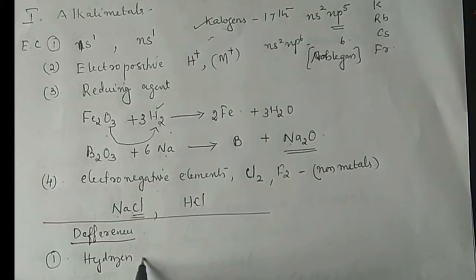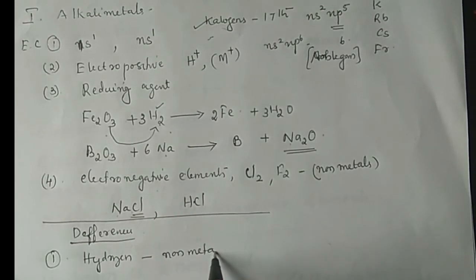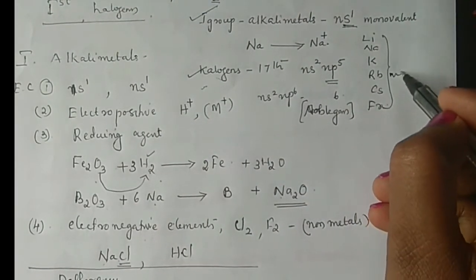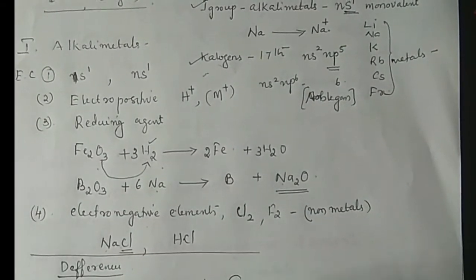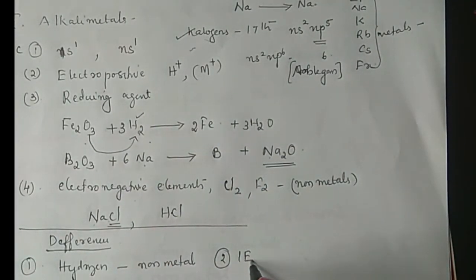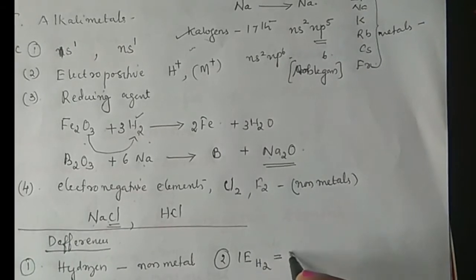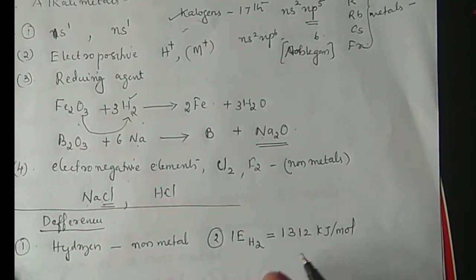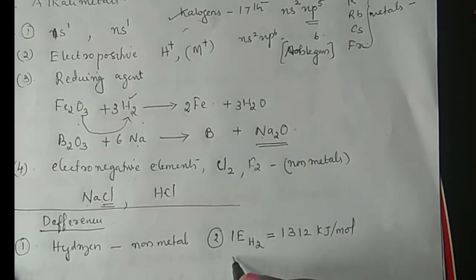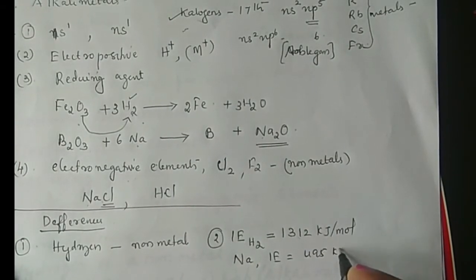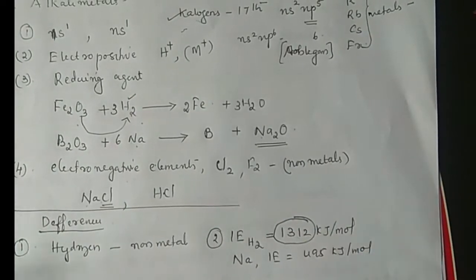However, there are also differences between hydrogen and alkali metals. Hydrogen is a non-metal, whereas alkali metals like sodium, potassium, and rubidium are metals with metallic characteristics. Second, the ionization energy of hydrogen is 1,312 kJ per mole, whereas for alkali metals it is much lower — for example, sodium has an ionization energy of only 495 kJ per mole.